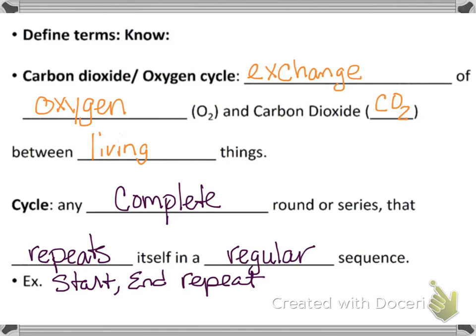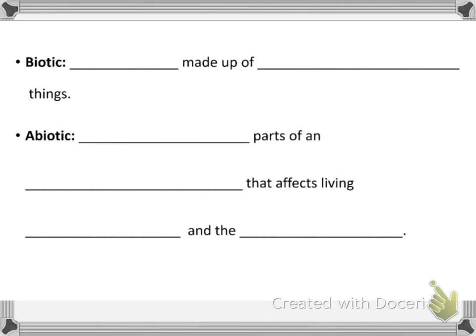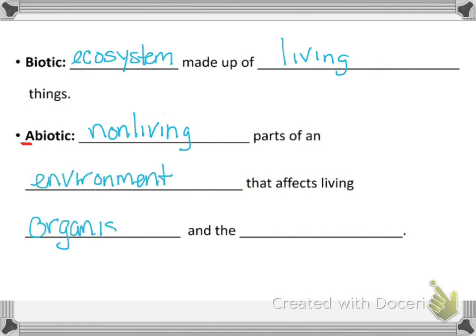A cycle is a complete round or series that repeats itself in a regular sequence. It has a start, a middle, an ending, and then it repeats. Now we're moving on to biotic. Biotic and abiotic were actually terms on the standard. Biotic is the part of an ecosystem made up of living things. Bio means life. And the A prefix means not or no, so abiotic means non-living — part of an environment that affects the organism and the ecosystem.